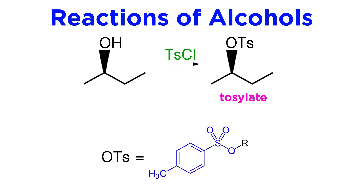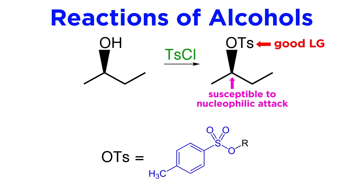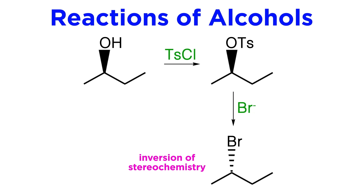Alcohols can be converted into tosylates by reacting with tosyl chloride. The purpose of this is to turn the hydroxyl into a good leaving group, as the carbon bearing this group is now susceptible to nucleophilic attack. This is useful if we want substitution to occur with only one inversion of stereochemistry as opposed to two, if preparing the alkyl halide on the way to some other final product.